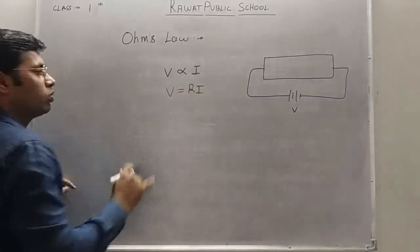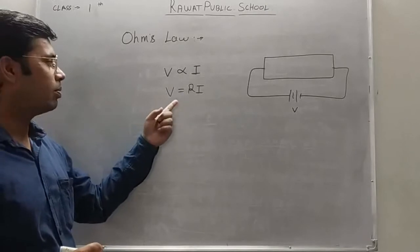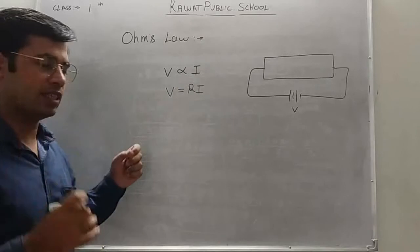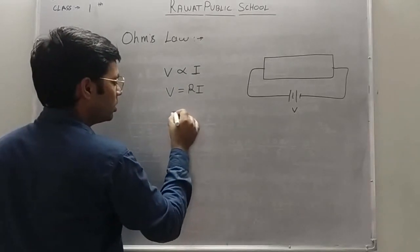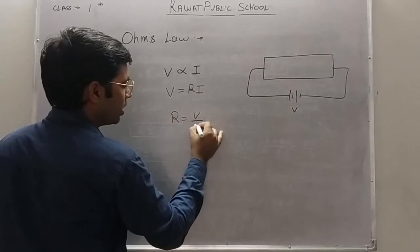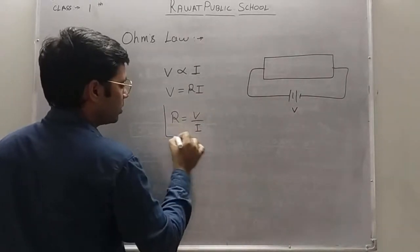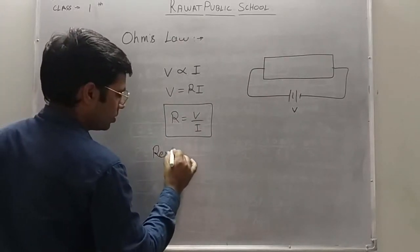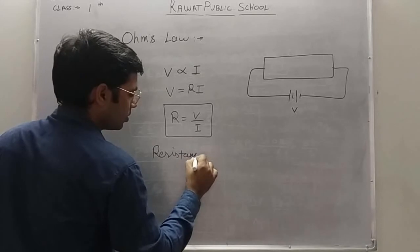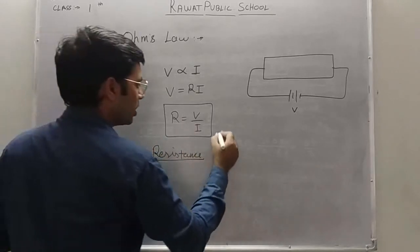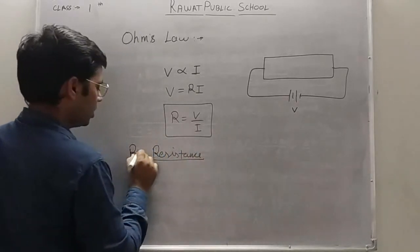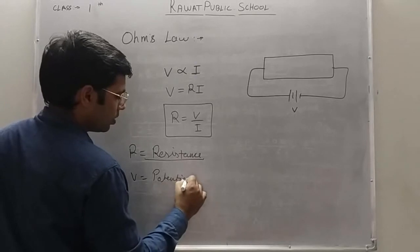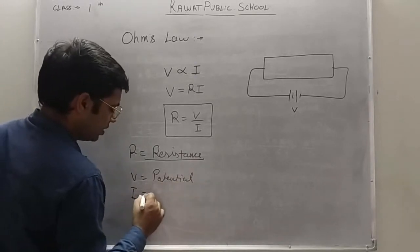If we are keeping all the physical quantities constant and further solve this equation, the constant is resistance R. So R equals V upon I. Here R is resistance, V is potential, and I is current.